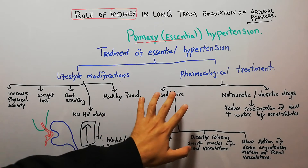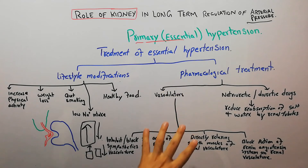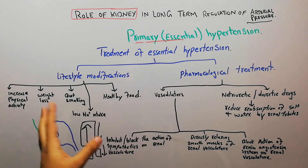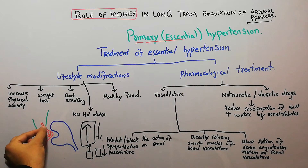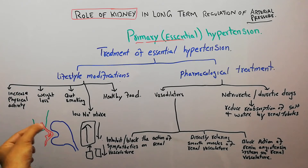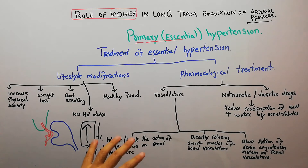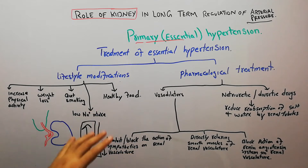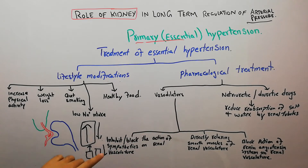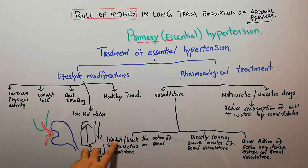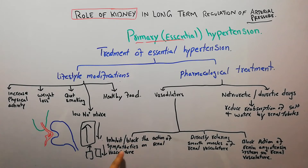Vasodilator drugs ultimately dilate blood vessels of the kidneys or other organs of the body, and they act by three main methods. First, they may inhibit the sympathetic nervous system or block the action of the sympathetic nervous system on renal vasculature.